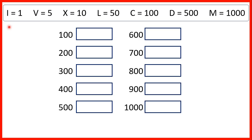In Roman numerals, numbers are represented by letters. I is 1, V is 5, X is 10, L is 50, C is 100, D is 500, and M is 1000.